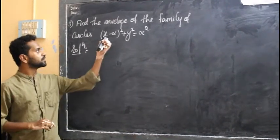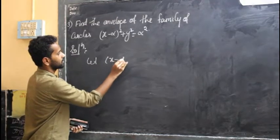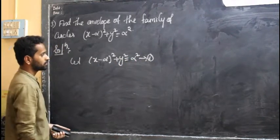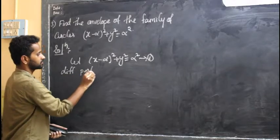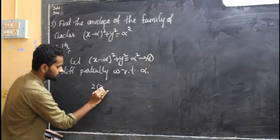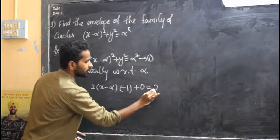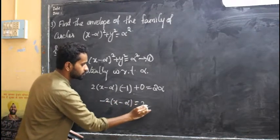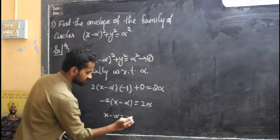Now find the envelope of the given family of circles: x minus alpha whole square plus y squared equal to alpha squared — this is equation 1. The next step is to differentiate partially with respect to alpha. Differentiating: 2 into x minus alpha, where x minus alpha differentiated with respect to alpha is minus 1, plus y squared differentiation is 0, equal to alpha squared differentiation which is 2 alpha. Simplifying: minus 2 into x minus alpha equal to 2 alpha, so x minus alpha equals minus alpha.